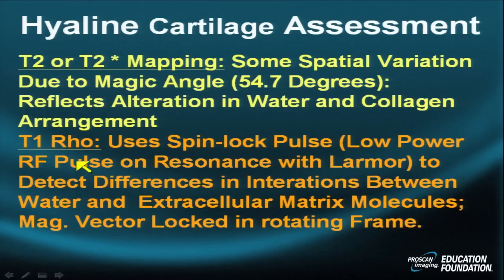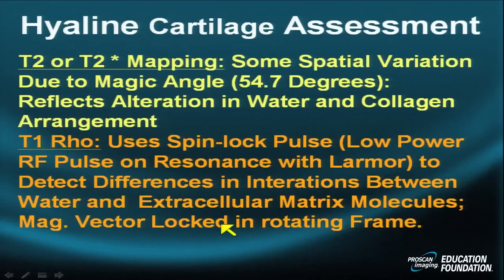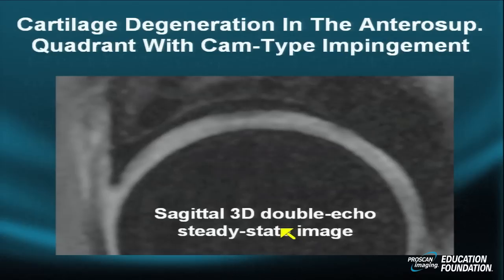Another technique is T1-rho, which uses spin-lock pulses with low power and an RF pulse on resonance, with very short — in fact ultra-short — TEs to detect differences in interactions between water and extracellular matrix molecules. The magnetic vector is locked in a rotating frame. Very subtle differences in T1 relaxivity using this special pulse sequence also reflect alteration in chemistry within the cartilage.